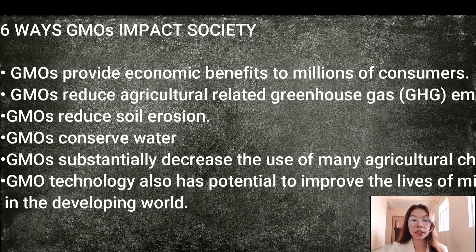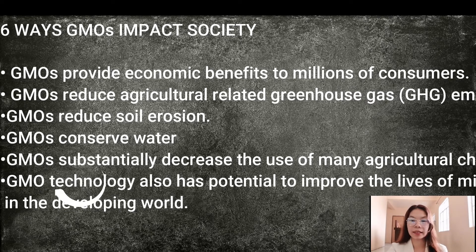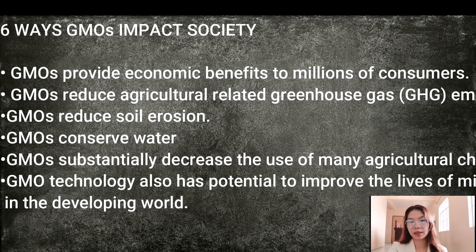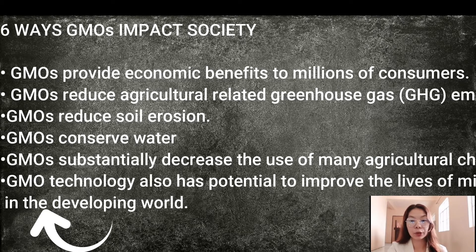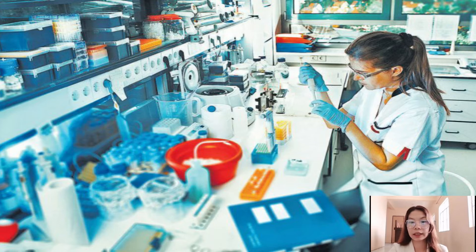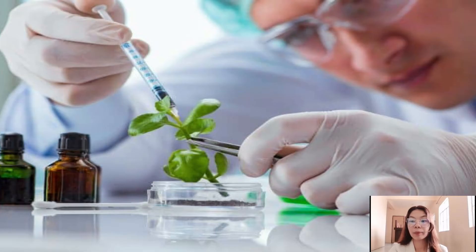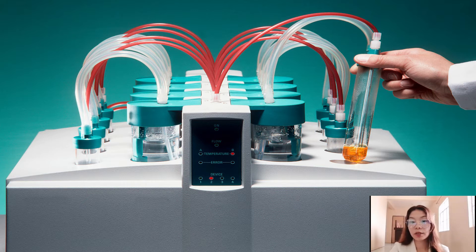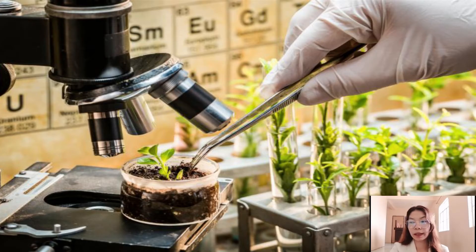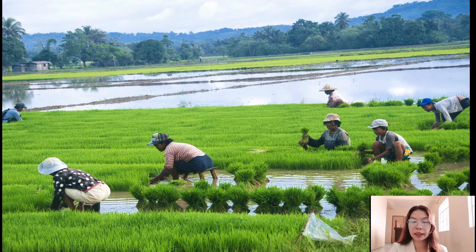The fifth way is that GMOs substantially decrease the use of agricultural chemicals, allowing safer and healthier products to be produced. The sixth is that GMO technology also has the potential to improve the lives of millions in the developing world — through technology, the process of producing products is made easier and the productivity of agriculture is improved.